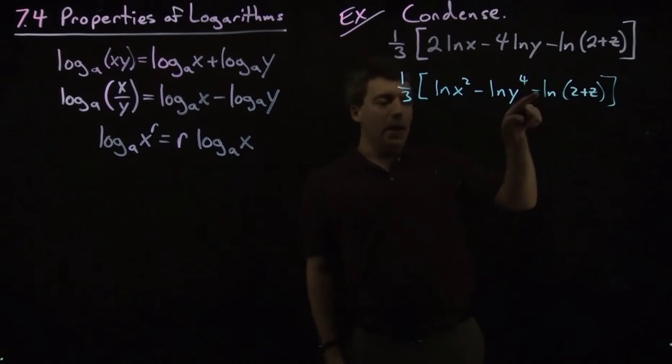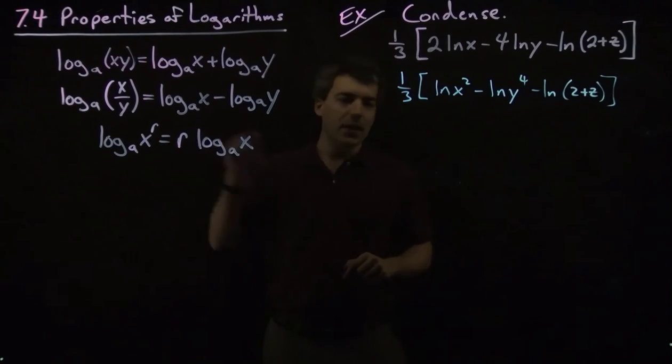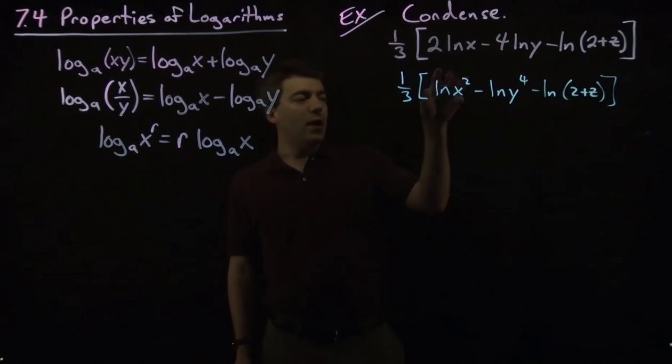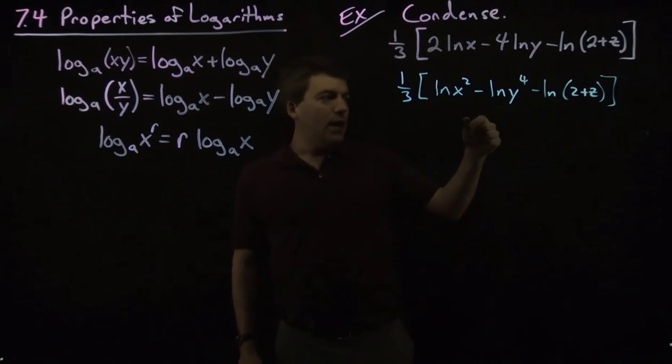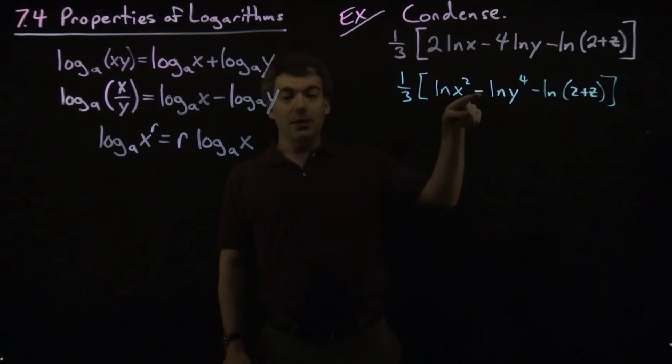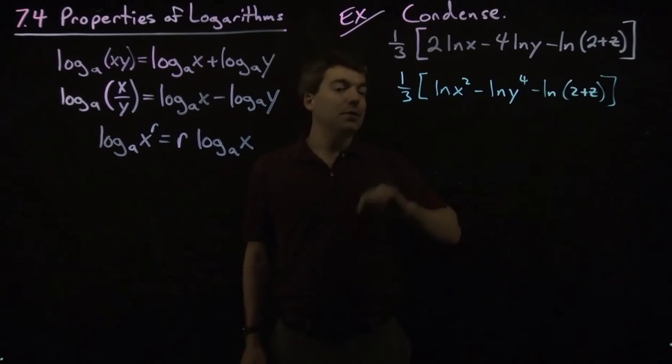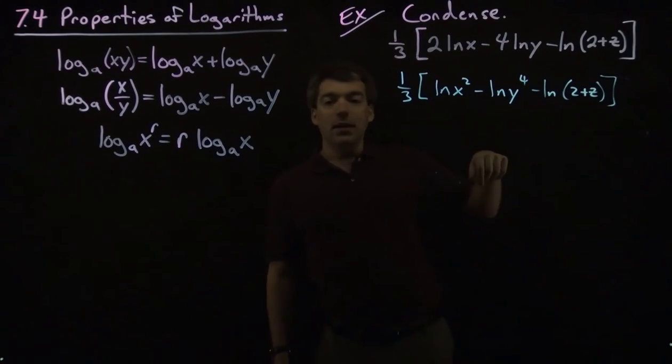This is also a minus, so this term here, this 2 plus z, will also appear in the denominator. As a general rule, if you have a logarithm that is positive, it will appear in the numerator. If you have a logarithm that is multiplied by negative 1, or negative, this will be in the denominator.